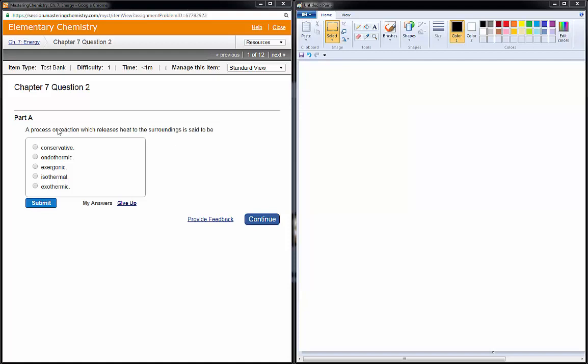The first question asks, what process or reaction releases heat to the surroundings? So heat is our enthalpy and we've got endothermic or exothermic.